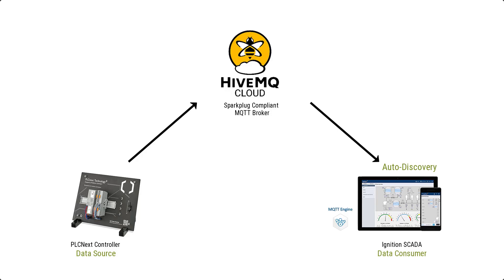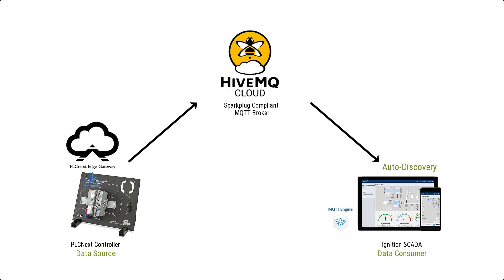To enable my PLCnext controller to participate in an MQTT Sparkplug network, I'm going to deploy onto the controller a PLCnext Edge Gateway — a software runtime that effectively turns my controller into a Sparkplug Edge of Network node. For coordination of the discovery process and exchange of information, both components are going to be connected through a cloud-based HiveMQ MQTT broker.